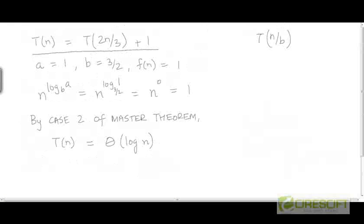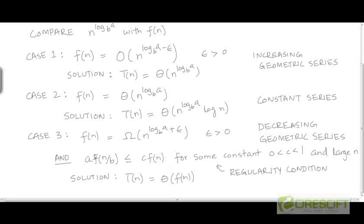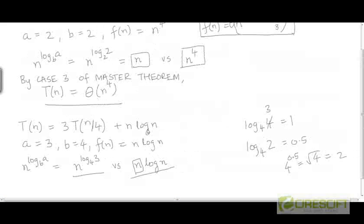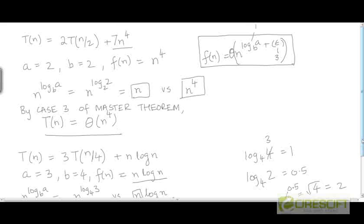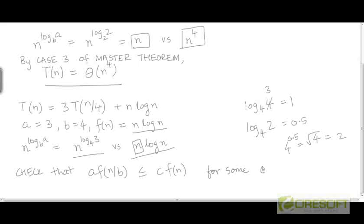But this time we need to check that the regularity condition holds as well, because f(n) is not of this clean form — there is a log term within the function. It's not just n to the power something, or some constant times n raised to the power some number, in which case we would have directly concluded that T(n) = Θ(f(n)) without checking for the regularity condition. So we need to check that a·f(n/b) ≤ c·f(n) for some constant c between 0 and 1.